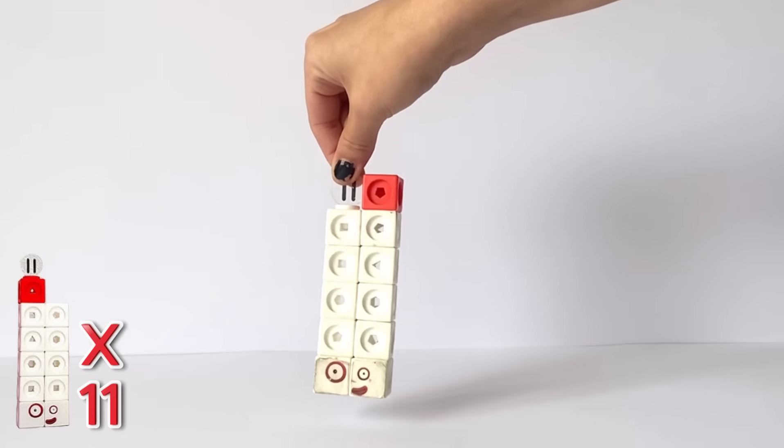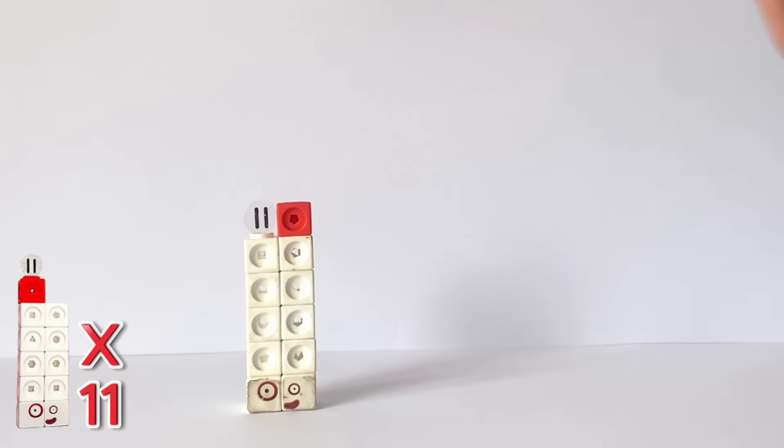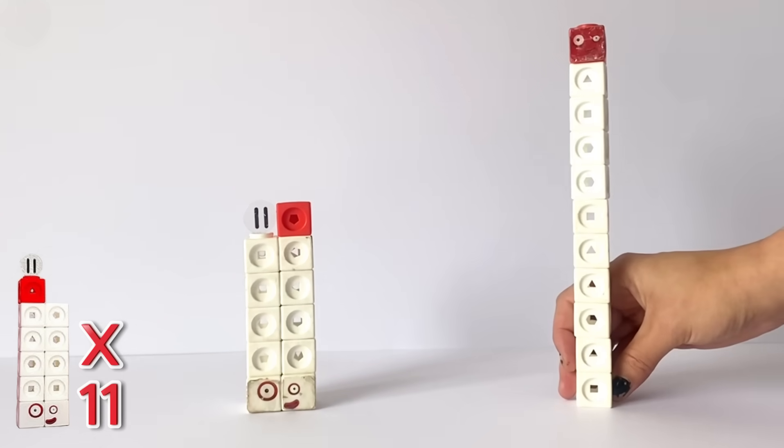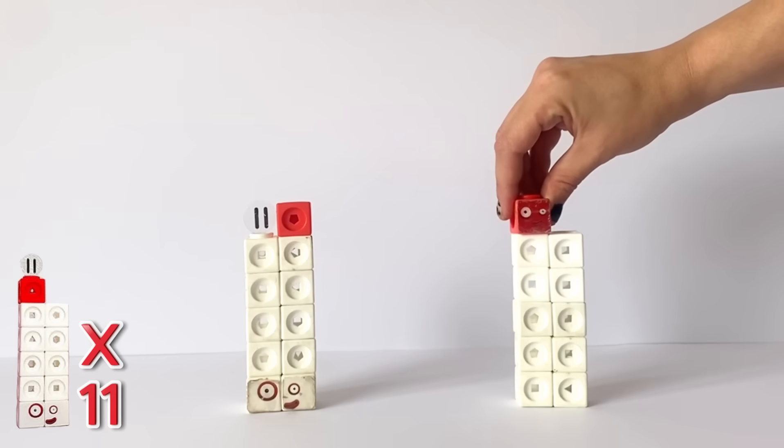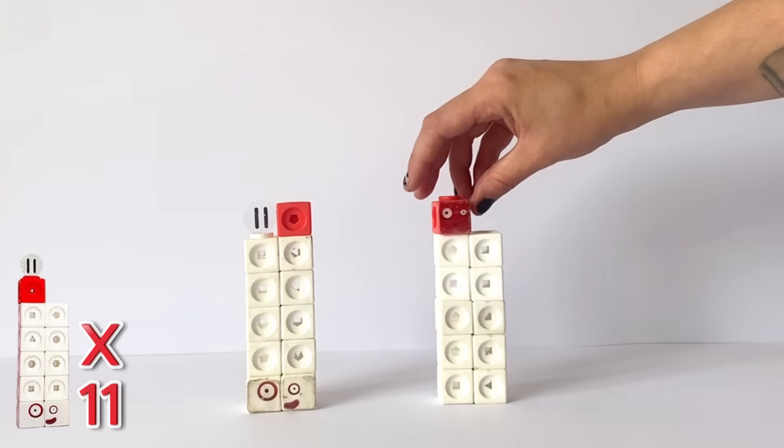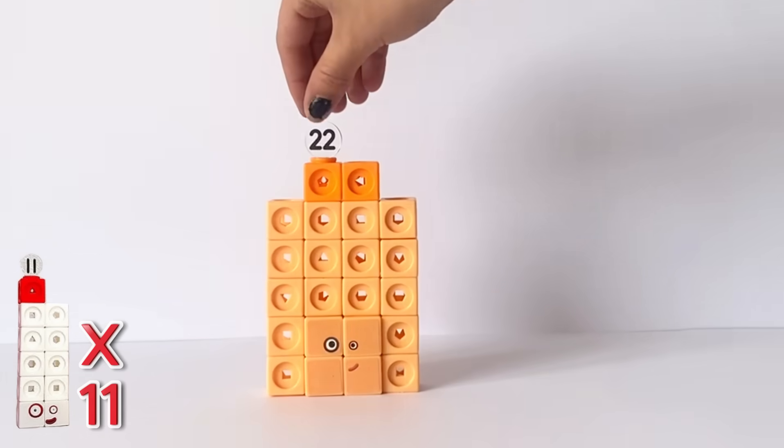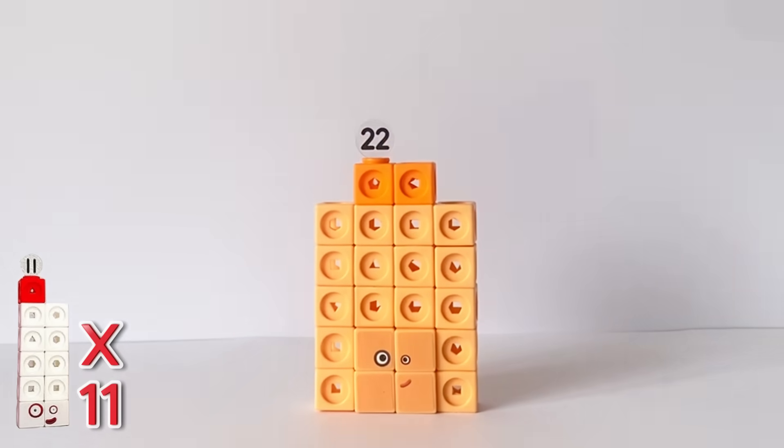Here is NumberBlock 11 with one large eye and one little eye. 1 times 11 is 11. So here is another NumberBlock 11. If we change this 11's form to match the other and multiply them together, 2 times 11 equals 22. As you can see, 22 has 2 odd sized eyes like NumberBlock 11.